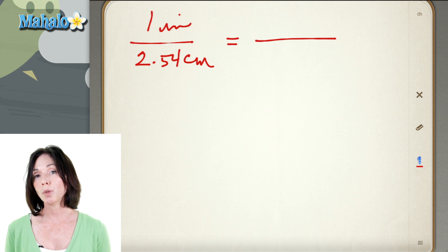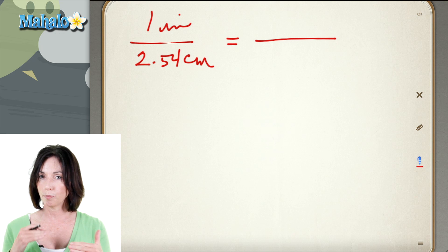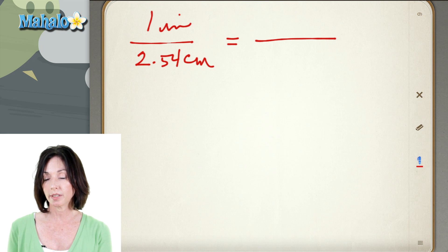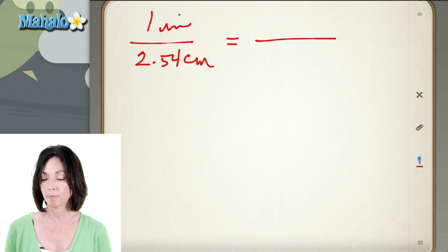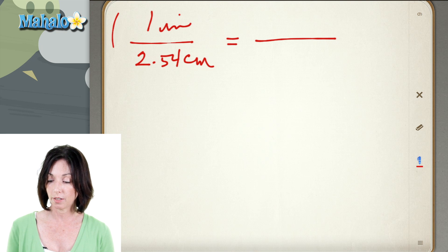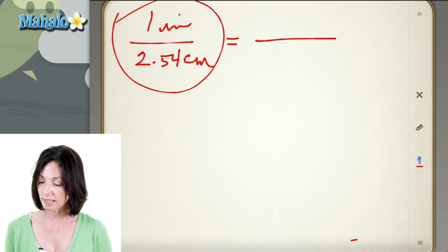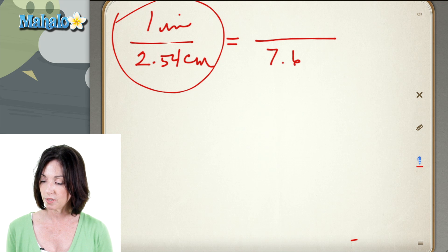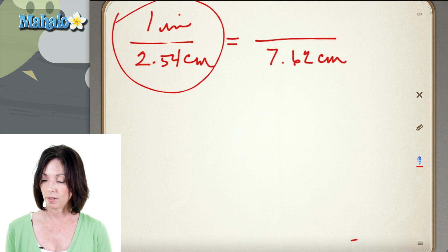Now whenever you do a proportion problem you have to make sure that you put things in the right order. So inches have to be on the top and centimeters have to be on the bottom because that's how I wrote my conversion factor here. So let's say I have 7.62 centimeters and I want to find out how many inches that is. So I have x inches on the top.